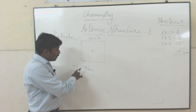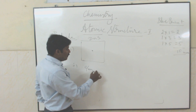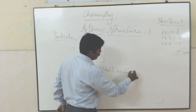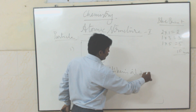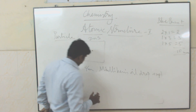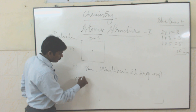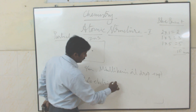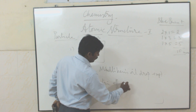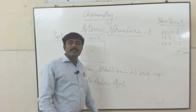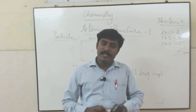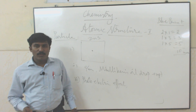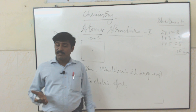Additionally, G.P. Thompson's E/m calculation experiment and Millikan's oil drop experiment also proved that electrons are particle nature. Photoelectric effect and black body radiation experiments also confirmed electron acts as particle nature.